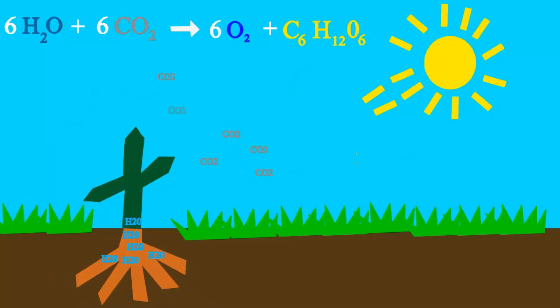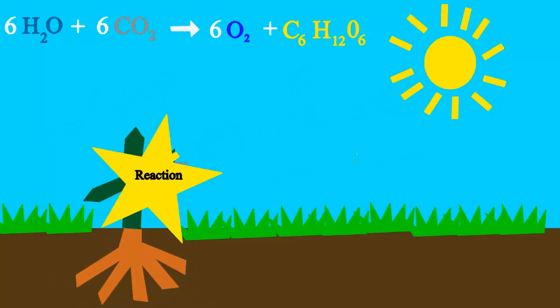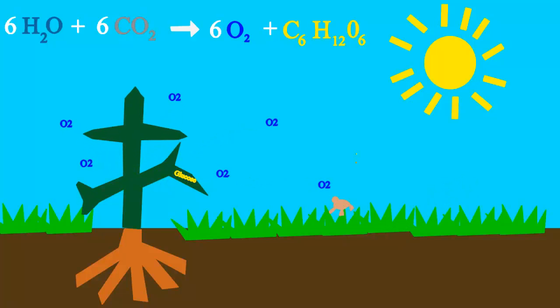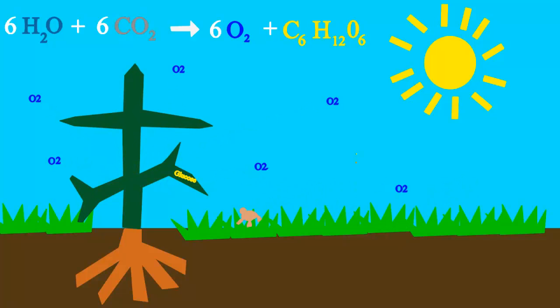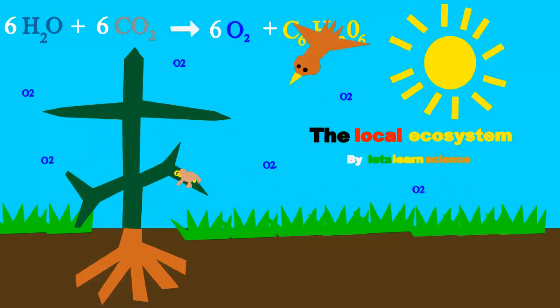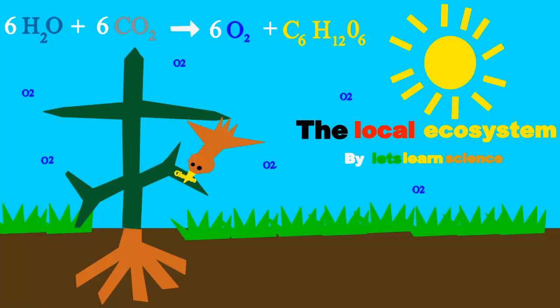Plants take water, sun and CO2 to make glucose, the sugar that they use for food. They also put oxygen into the air so we can breathe, because oxygen is everywhere.